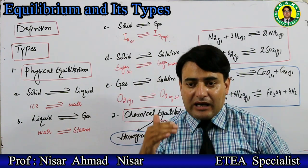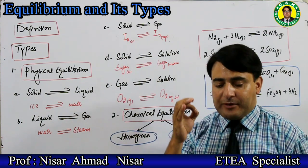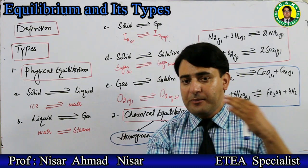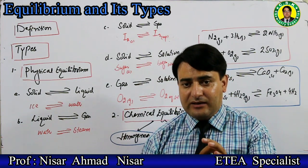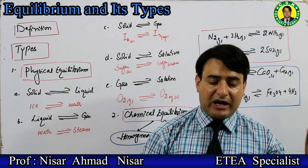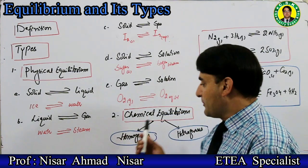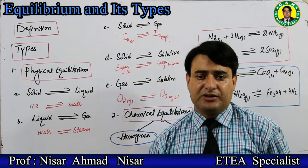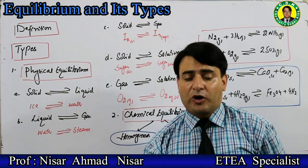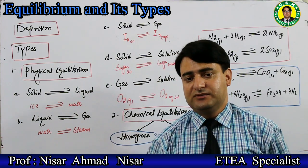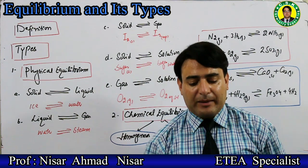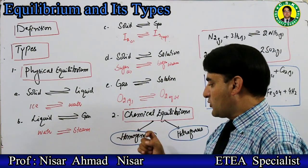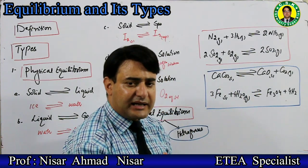In a chemical reaction where two opposite reactions - forward reaction and backward reaction - occur, this is a reversible chemical reaction. Where the forward reaction rate and backward reaction rate become equal, that is chemical equilibrium. In a reversible reaction, where the reactant and product concentrations become constant, that is chemical equilibrium. Chemical equilibrium is also of two types: homogeneous and heterogeneous chemical equilibrium.